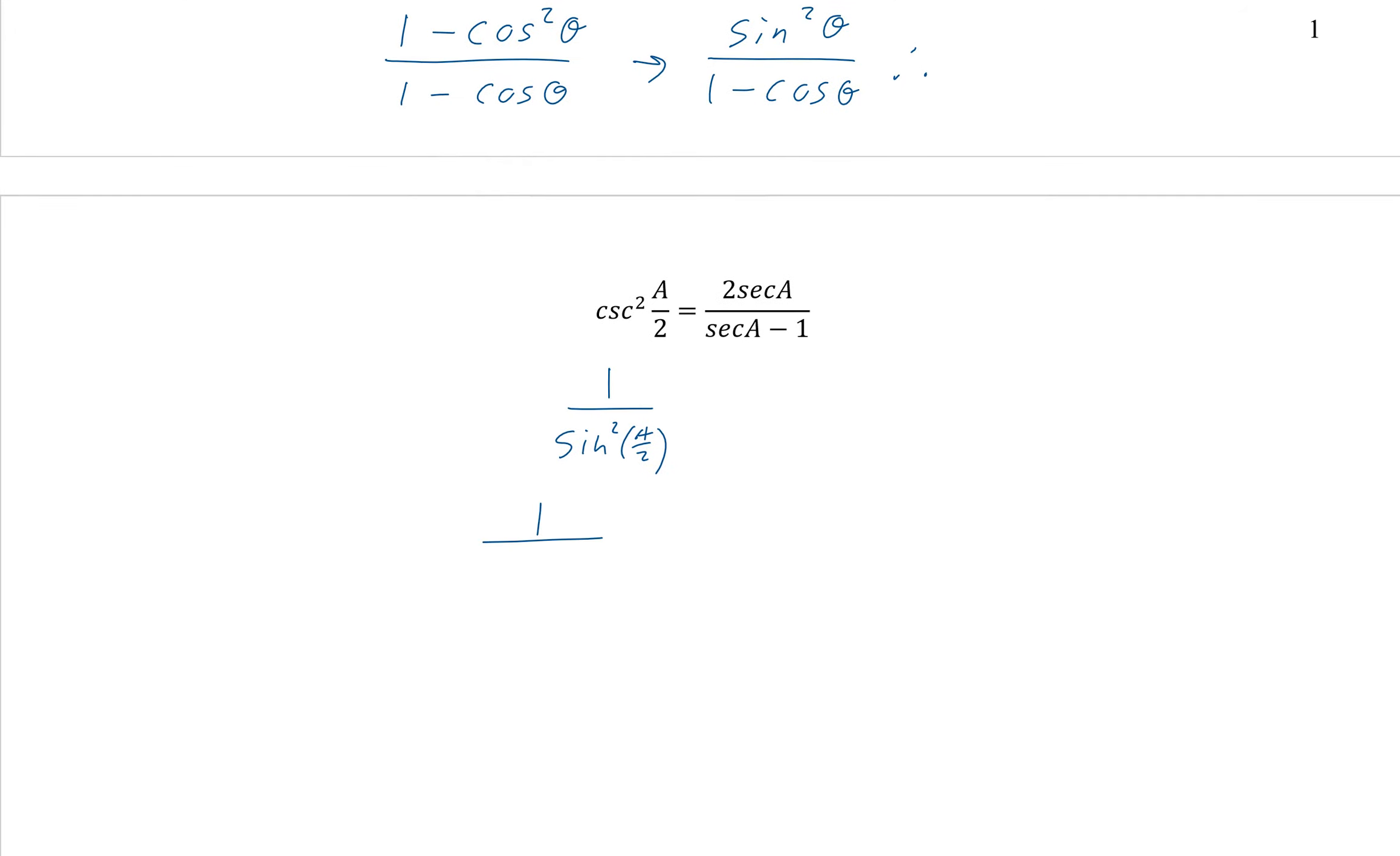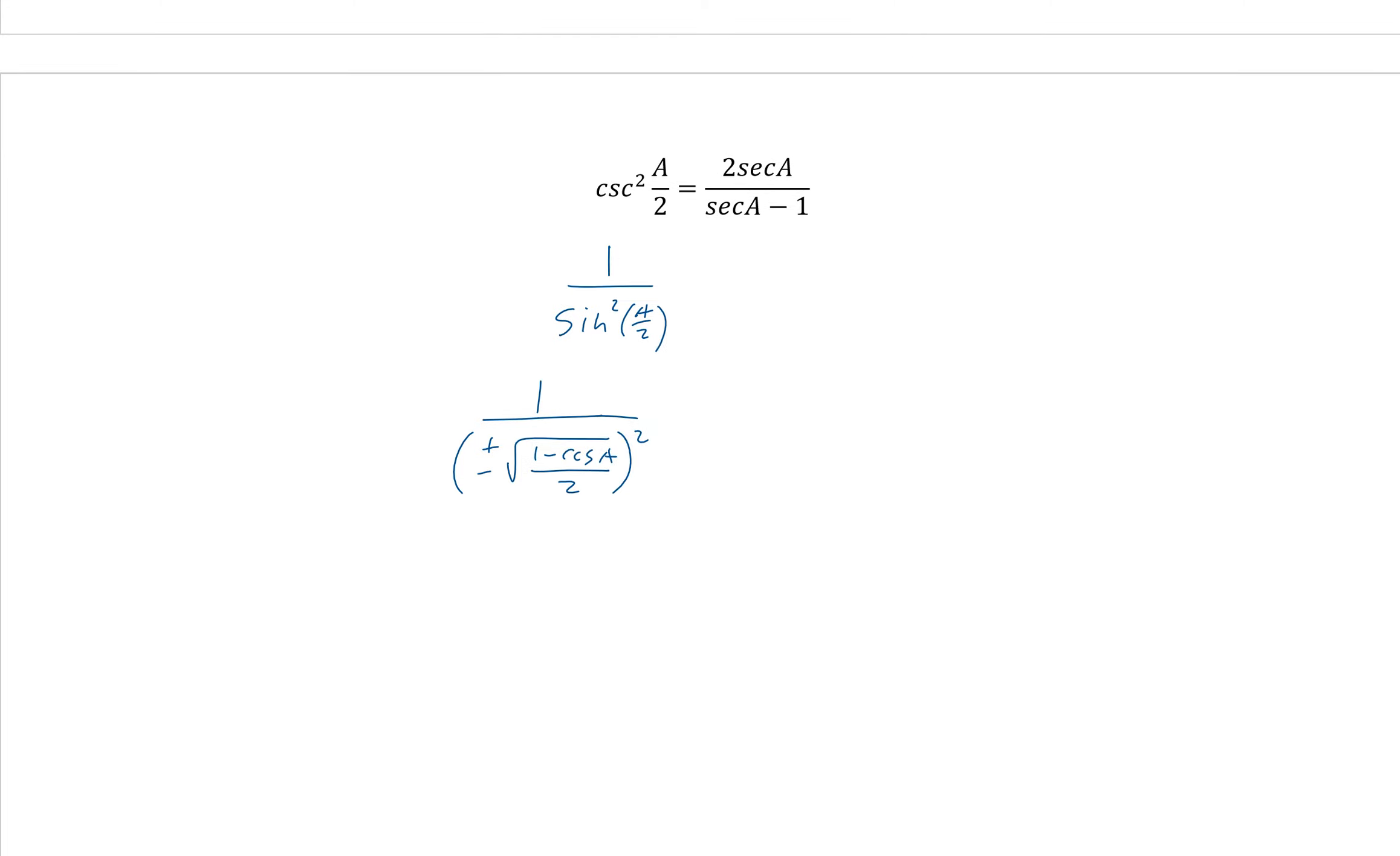This is why we're using squares. The squares will get rid of the square root a in this case, and everything will work out.